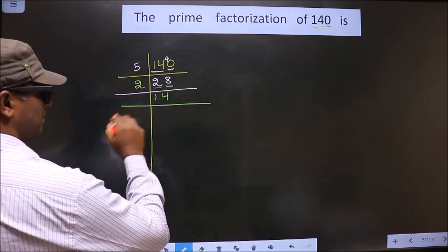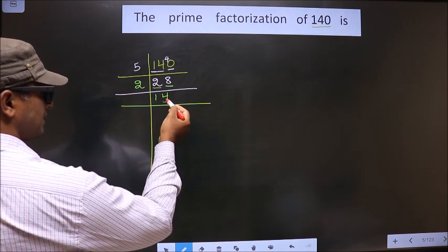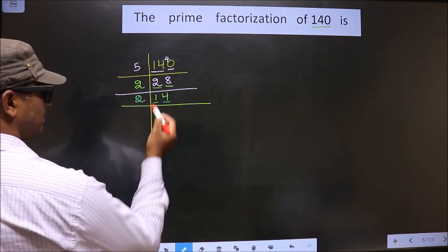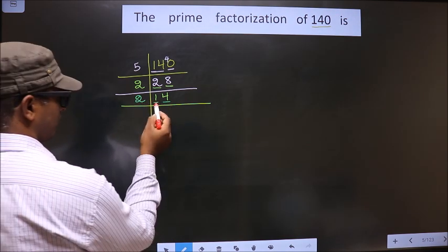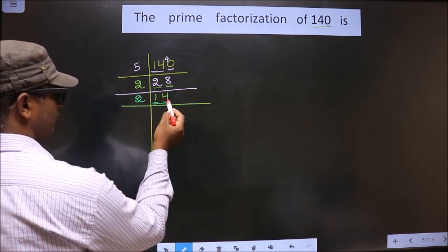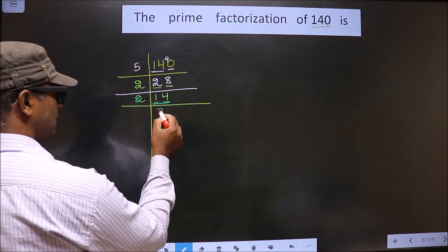Now, for this number, the last number is 4, which is even, so we should take 2. So, first number is 1. 1 is smaller than 2, so we should take 2 numbers, that is 14. So, when do you get 14 in 2 table is 2 times 7 is 14.